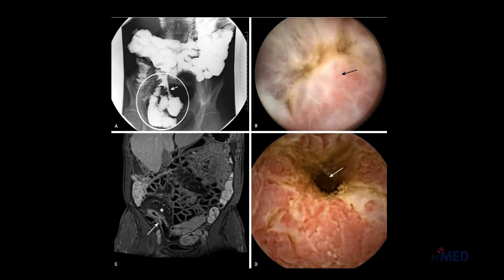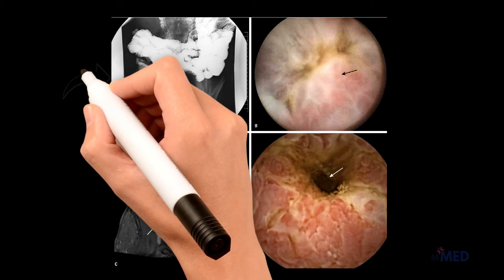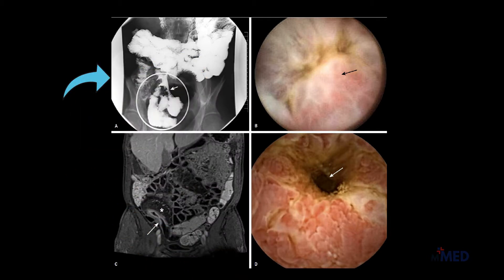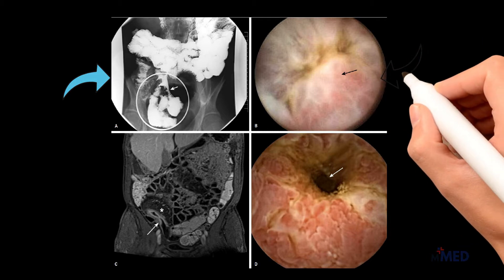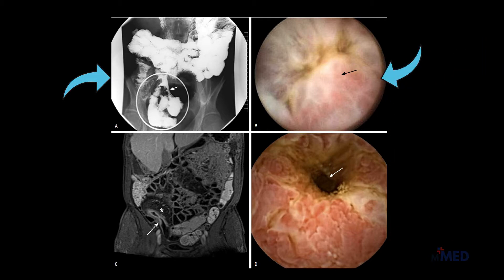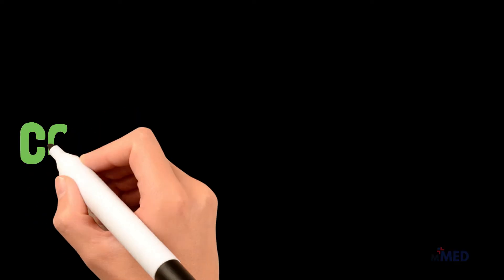Additional imaging of the small bowel in Crohn's disease: picture A shows an ulcerated stricture with pre-stenotic dilation, picture B shows an endoscopy image of an ileal ulcer in a patient with Crohn's disease, picture C shows bowel wall thickening of the terminal ileum with active inflammation, and picture D shows a capsule endoscopy revealing an ileal Crohn's disease stricture.